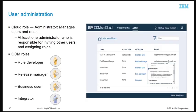In ODM on Cloud, users are assigned roles that determine their access to the development, test, and production environments. At the cloud level, there is one role for administering the environments. The administrator manages the users and controls the role assignments, and each cloud instance needs at least one administrator. ODM on Cloud provides a set of roles for users to collaborate as a team on modeling, authoring, governing, deploying, and integrating the decision services. The roles are Rule Developer, Release Manager, Business User, and Integrator.